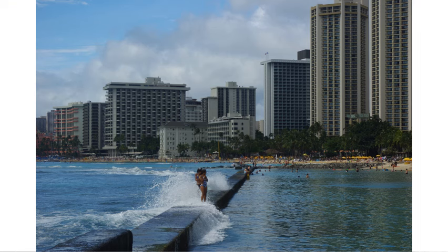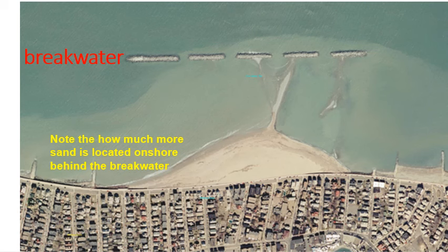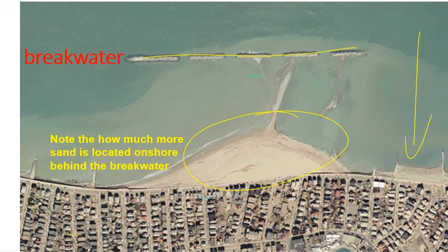Here's a breakwater in Honolulu, Hawaii — a big-time beach destination. They constructed this concrete wall to make the water on this side go slow. You can see in the picture how big the waves are on the outside — faster-moving water. But once they hit that wall and go over the top, they have to slow down, causing less erosion. From the aerial shot, you can see how much sand is behind the breakwater compared to not nearly as much sand on the open side. These breakwaters work.